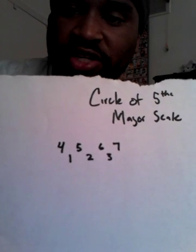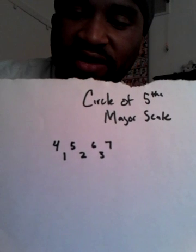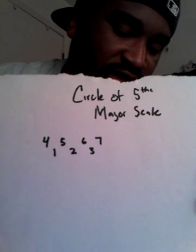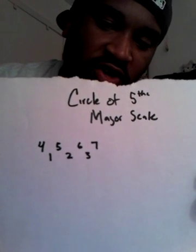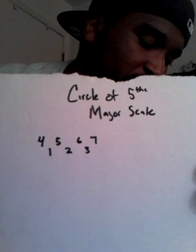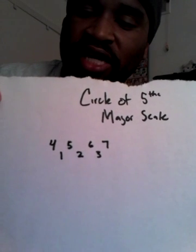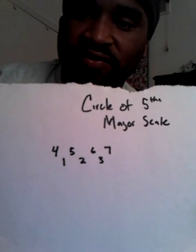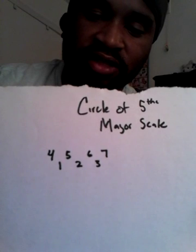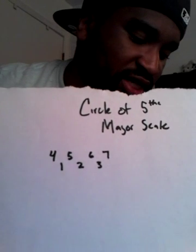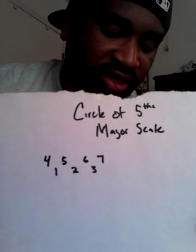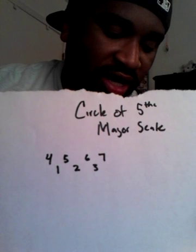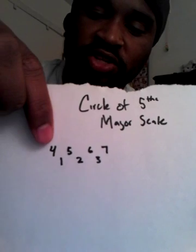The circle continues to go until it gets all the way back to the one. But after you hit the seven, you'd be getting into the flat notes. Let's say for E flat — the seven of E flat is D. If you go hit another fifth, it would be A, and A is E flat's flat fifth. After the seven, it would just be flat 5, flat 2, flat 6, flat 3, flat 7. Then when you hit the flat seven, you hit the four. E flat's minor seven is C sharp, then C sharp's fifth is A flat, and A flat is E flat's four — and then you would end up at the one.